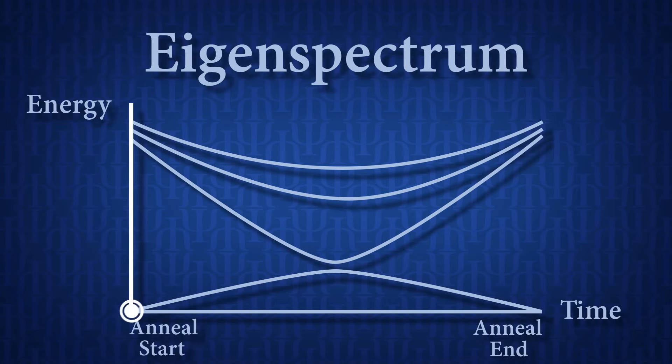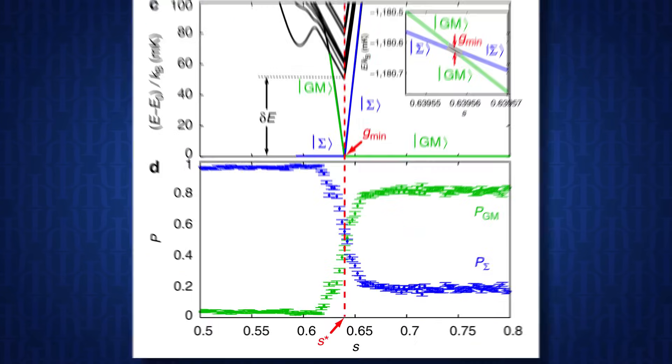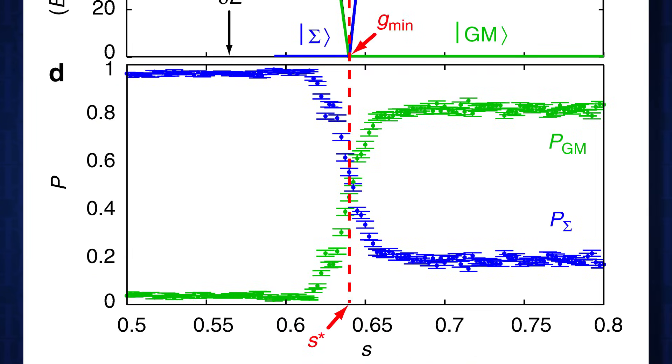But if you speed up the anneal after the gap, you'll stay in the lower energy state. So by speeding up the anneal at different points in the anneal schedule, you can determine whether there is a minimum gap and also where it is in the anneal. So what these results clearly showed is that there is indeed a gap at the point predicted by the quantum models. What this means is that the whole Hamiltonian and energy spectra view of these systems is correct. And these systems are running quantum annealing and not classical annealing.